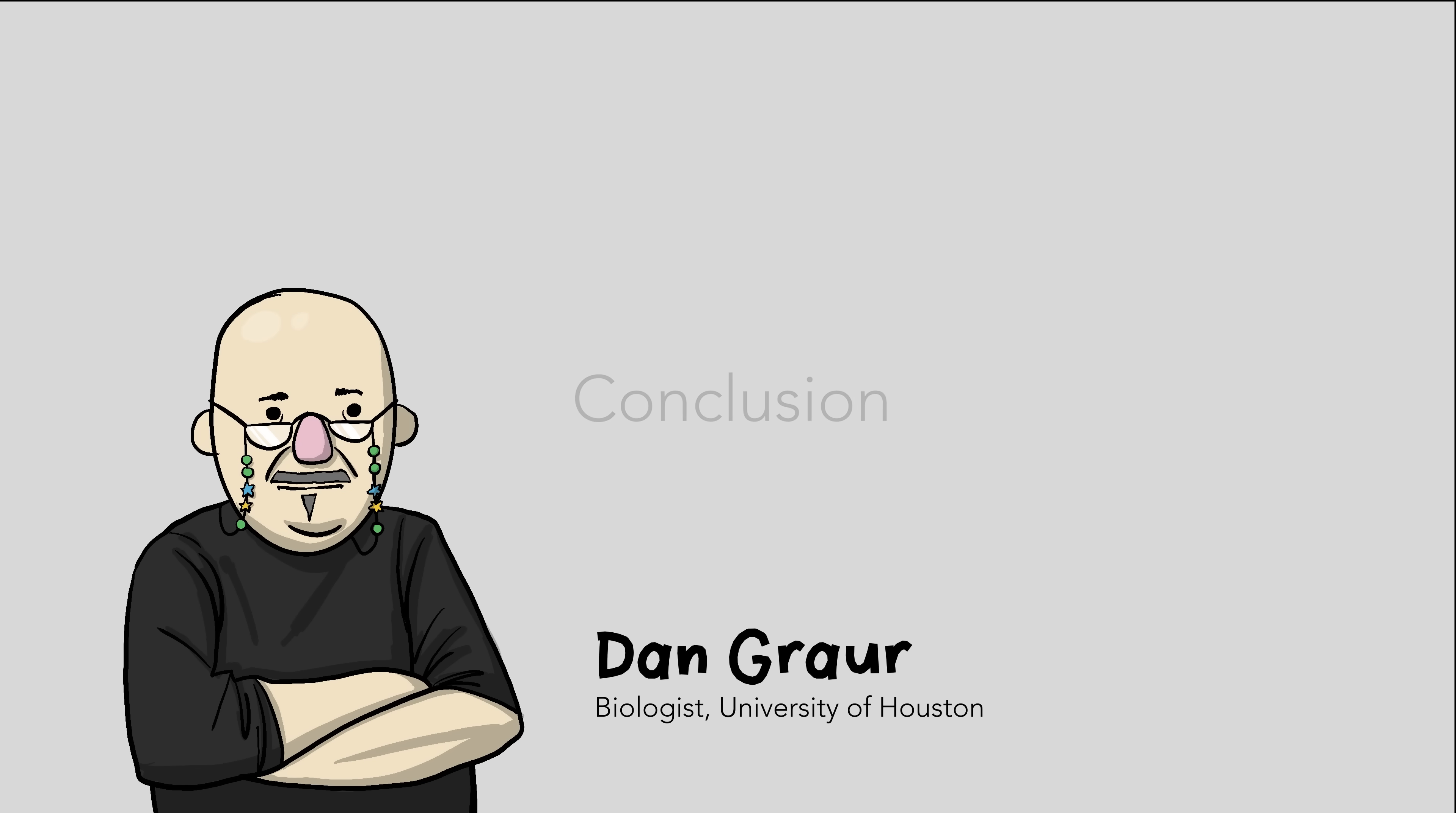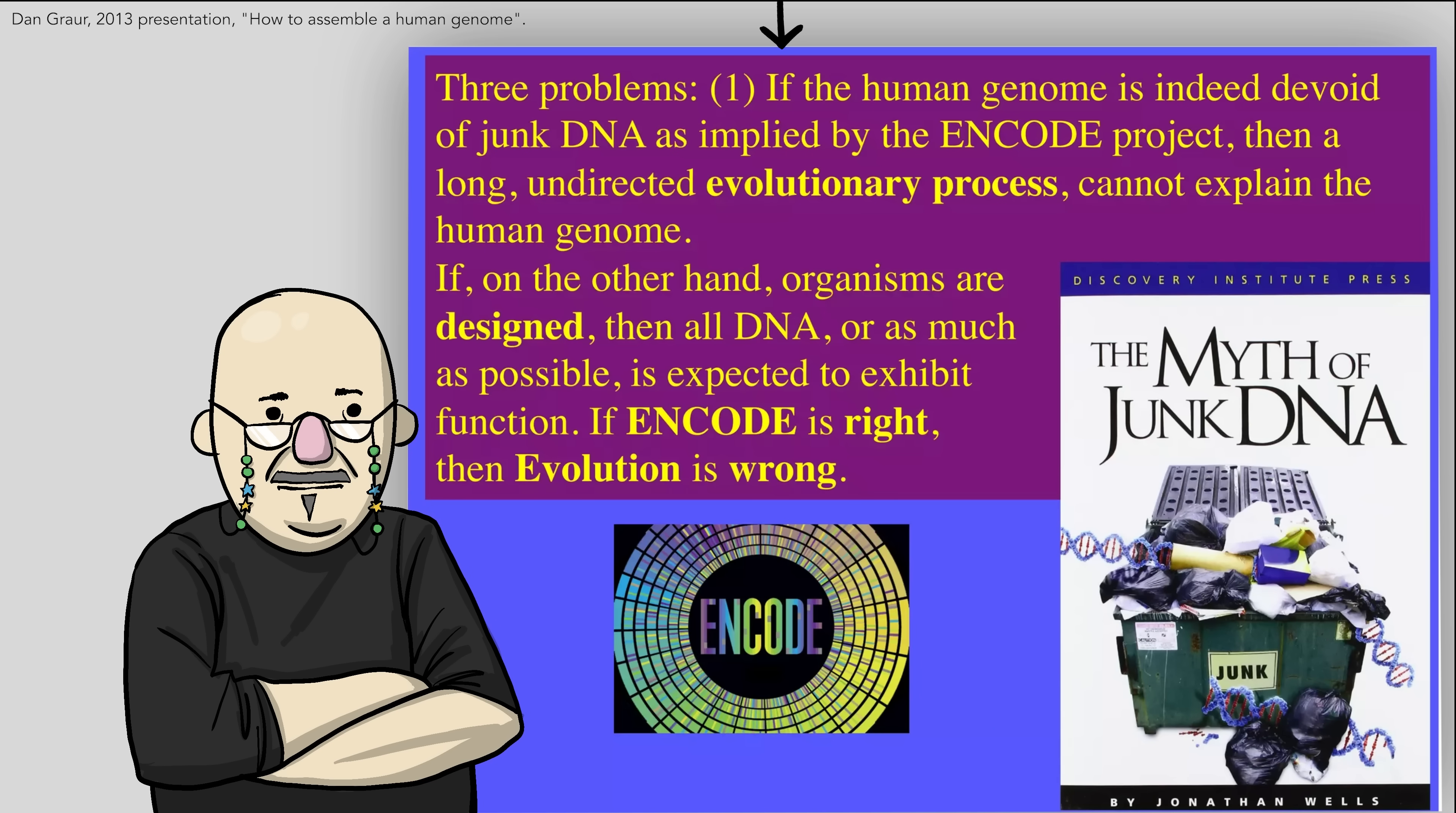Like many others, University of Houston biologist Dan Grauer realized that a lot was riding on junk DNA. He, too, understood that you can tell a lot about a theory by the predictions it makes. He said this. If the human genome is indeed devoid of junk DNA, as implied by the ENCODE project, then a long, undirected evolutionary process cannot explain the human genome.